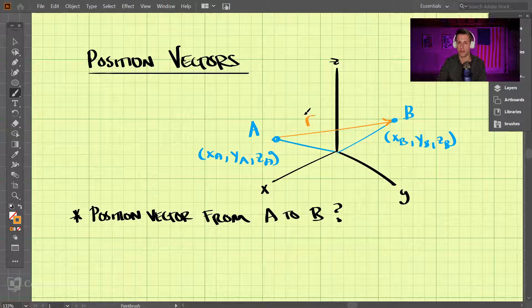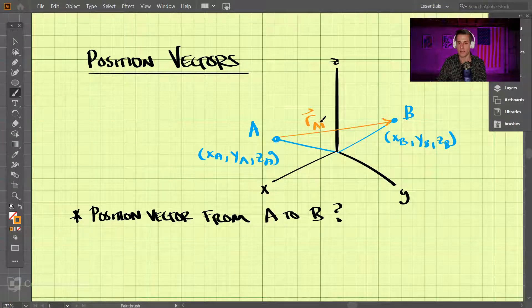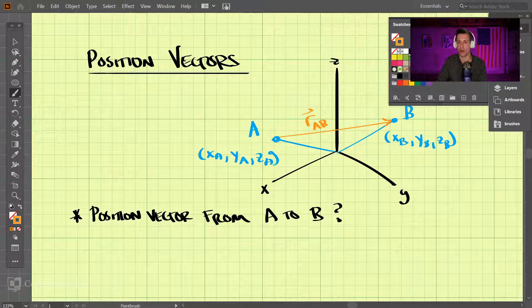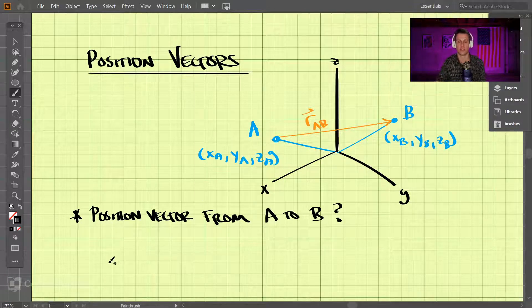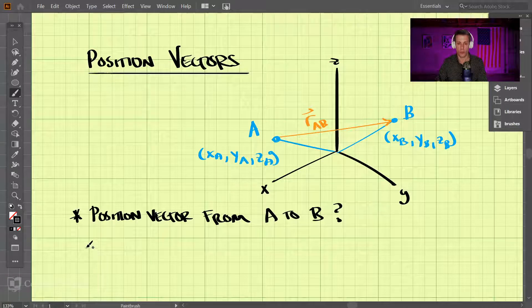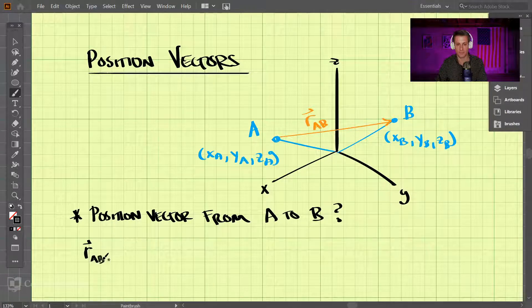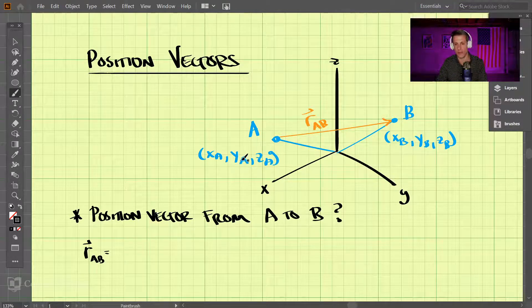So what is that vector? And let's call that r_AB. We usually use the letter r for position vectors. So what is r_AB equal to? And these points have the coordinates x_A, y_A, z_A and x_B, y_B, z_B for each of the points.